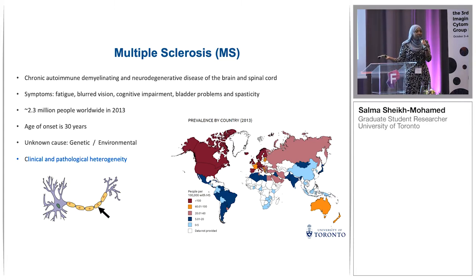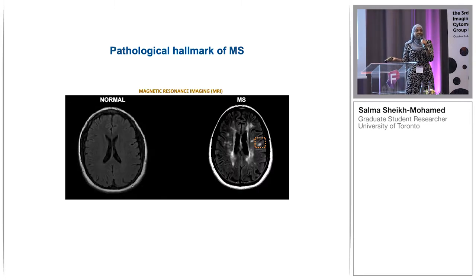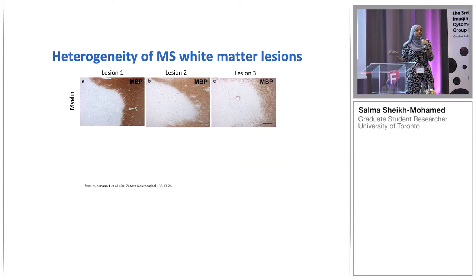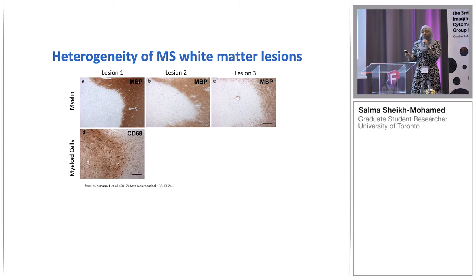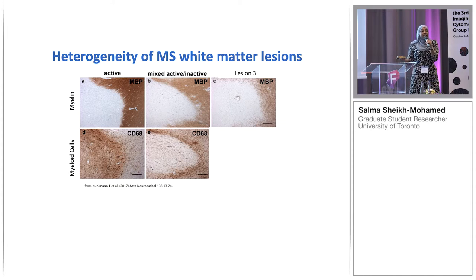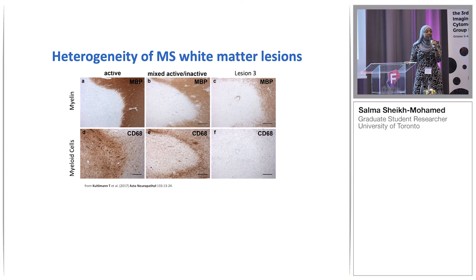So what exactly is multiple sclerosis? MS is a chronic autoimmune disease in which the body's immune cells infiltrate the central nervous system and demyelinate neurons. Myelin — pointed out by the black arrow — is mostly fat, but essentially it protects the axons of neurons. Not only does it protect, it allows neurons to communicate fast and effectively with each other.